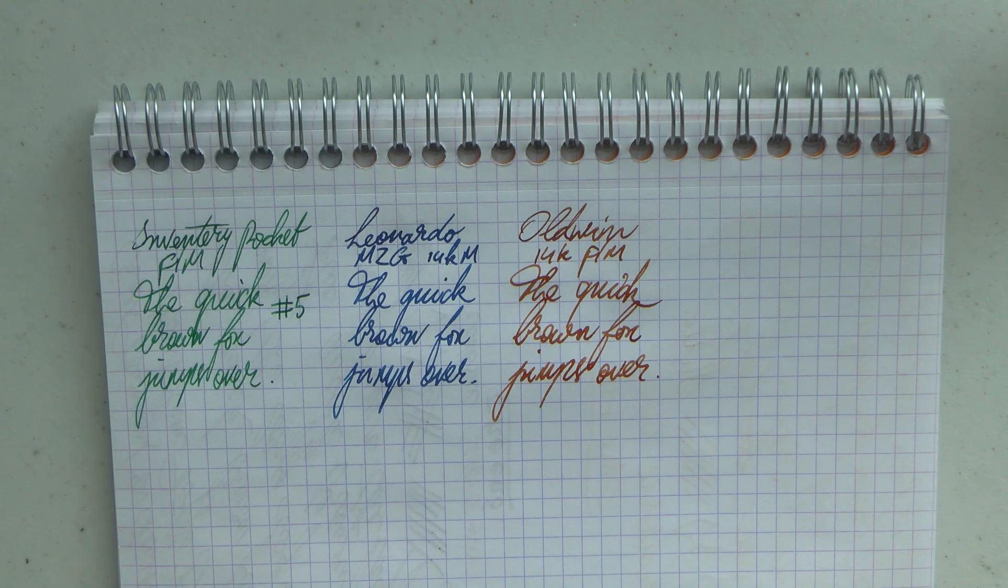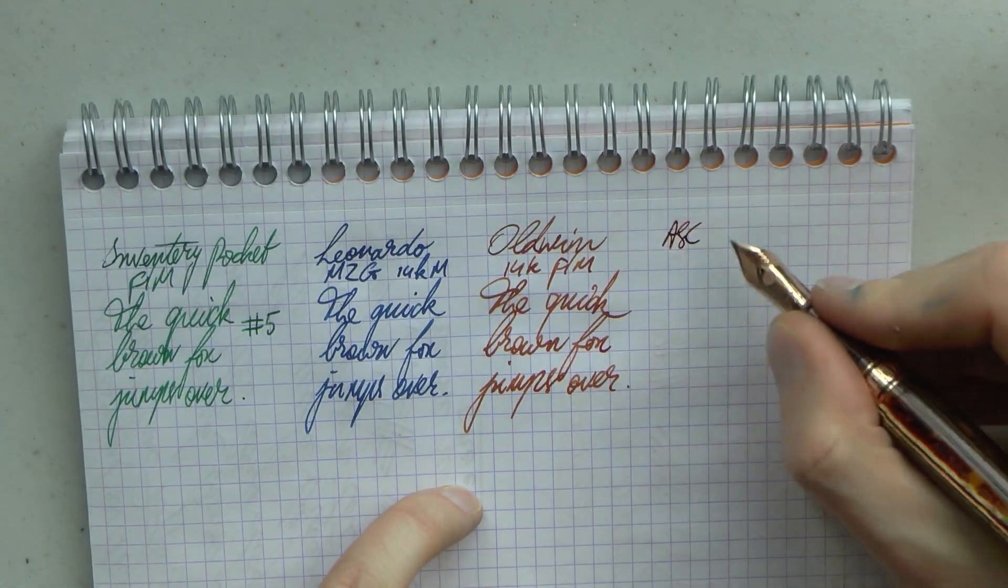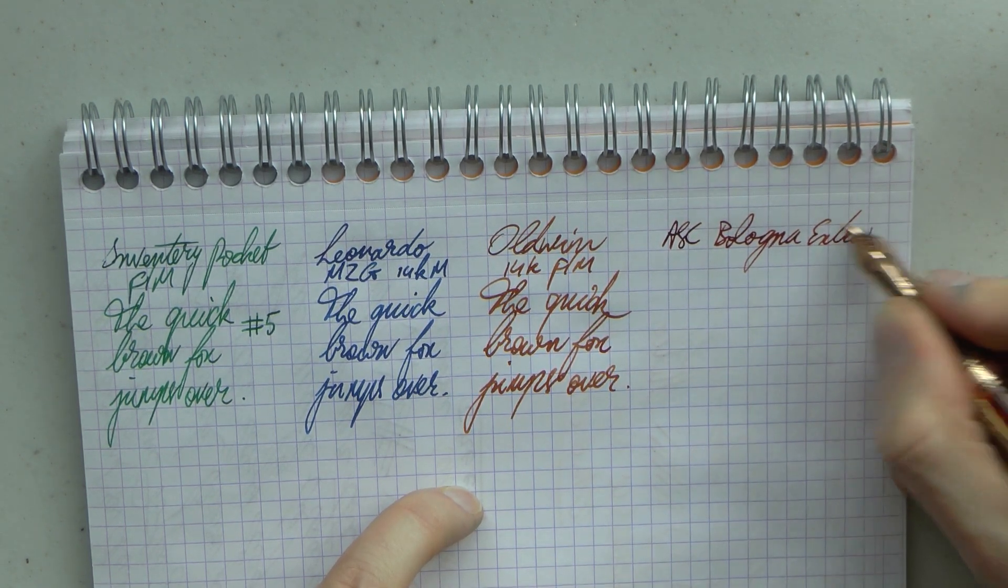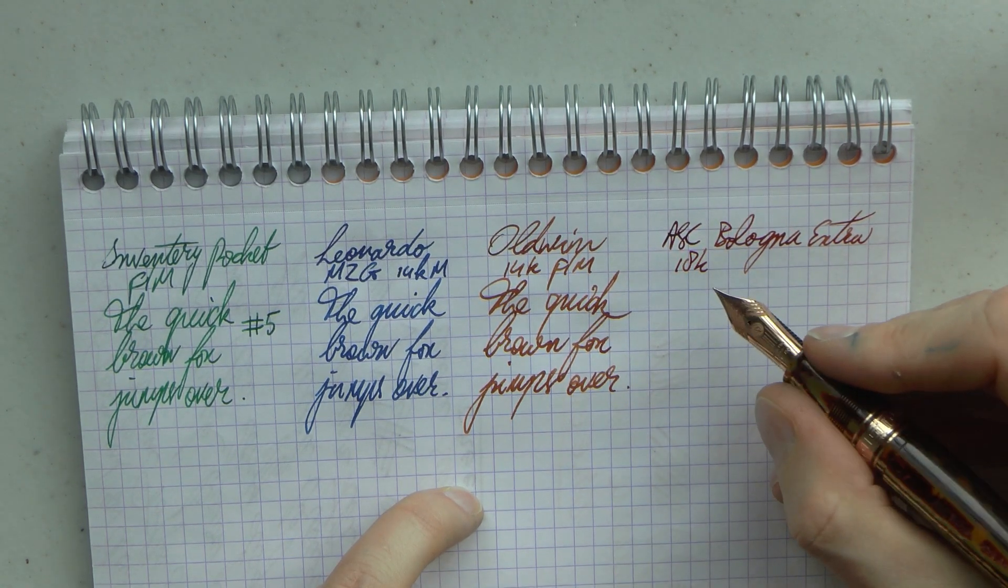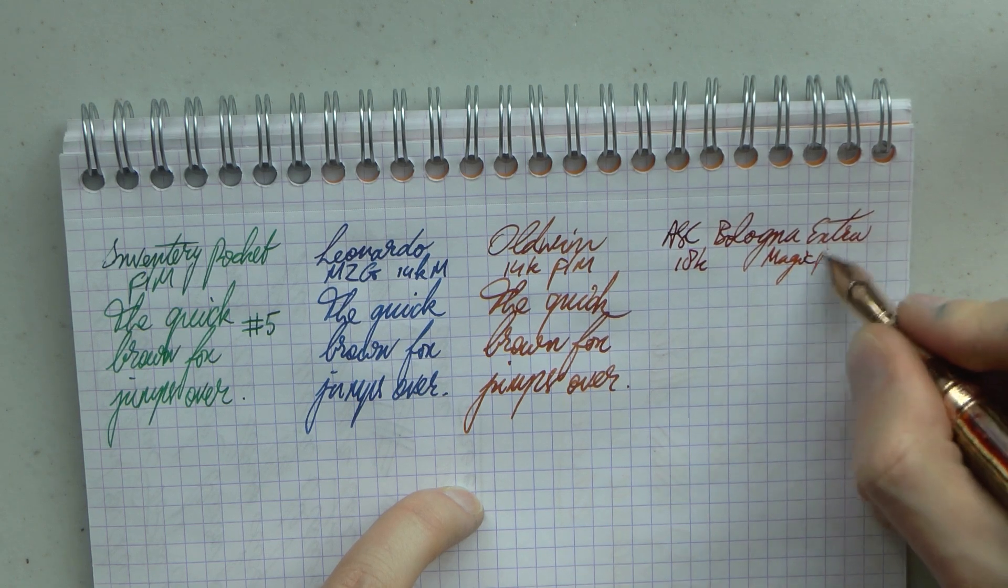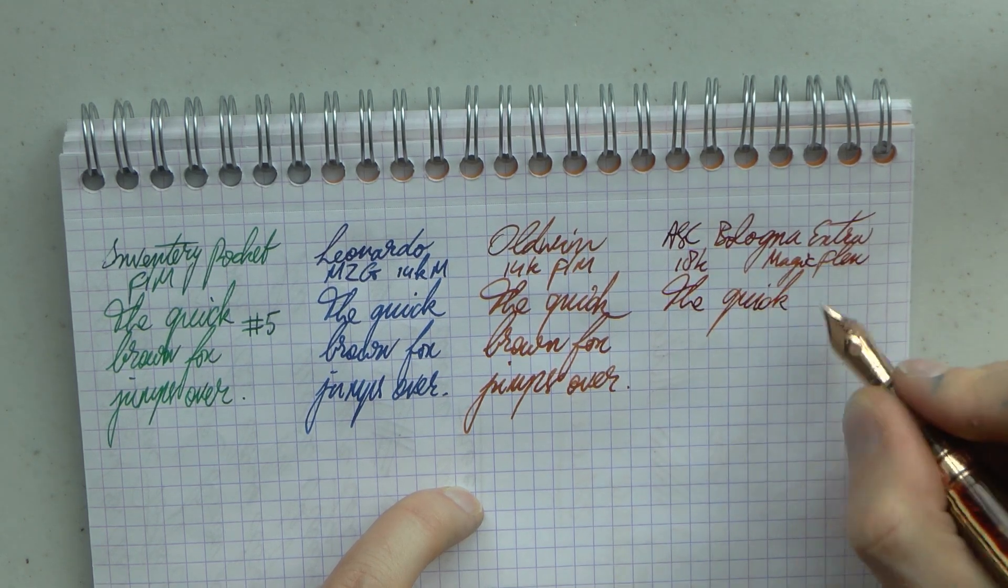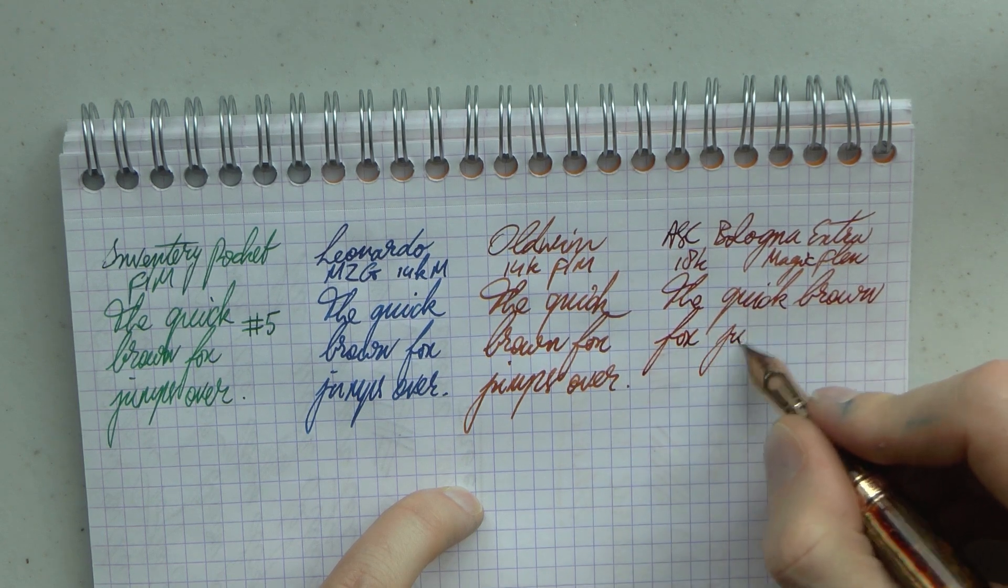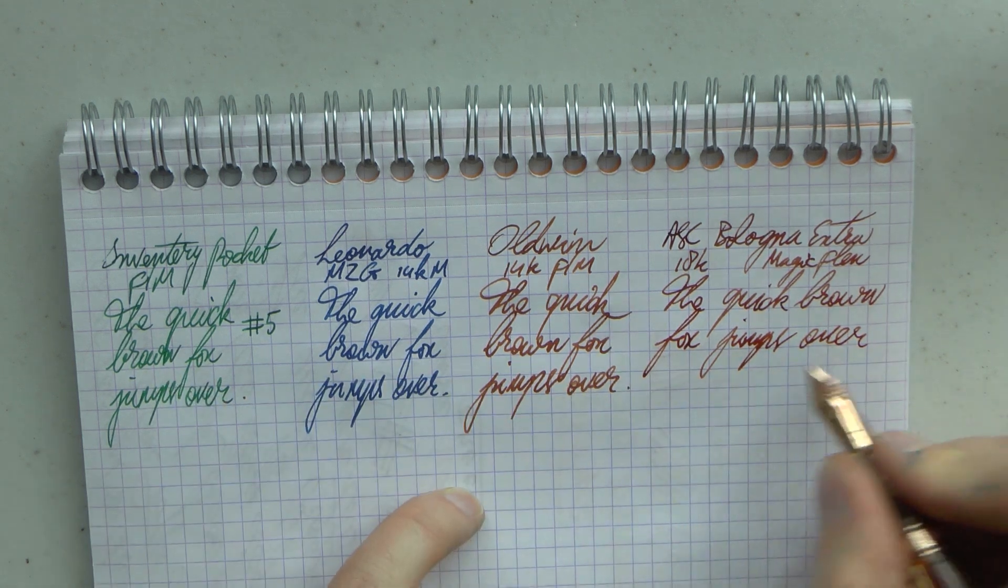And I'm not exactly sure why I never finished the sentence. I'm sure you were wondering that. I don't know, but I'm trying to keep it on kind of the same level. And here we have the Armando Simoni Club Bologna Extra. This is an 18K, and this is their One Size Fits All Magic Flex. But I'm using this without any pressure, so in my mind, in this particular version, it writes like a fine. So again, I wanted all the nib grades to be about comparable.